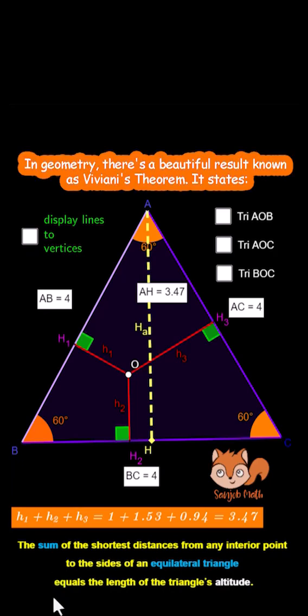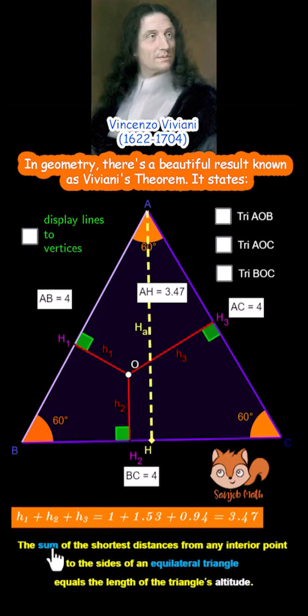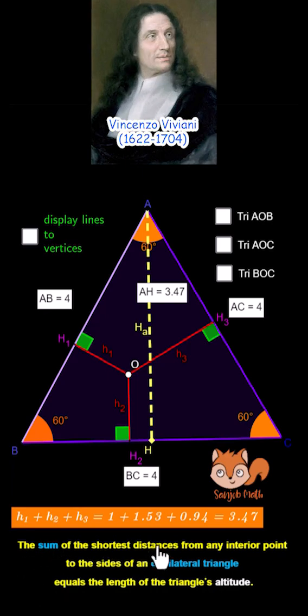In geometry, there's a beautiful result known as Viviani's theorem. It states, the sum of the shortest distances from any interior point to the sides of an equilateral triangle is equal to the length of its altitude.